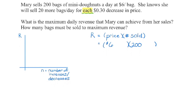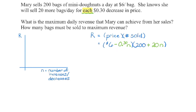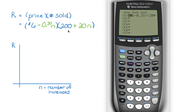Let's try one more revenue question. We are selling 200 bags of mini donuts at $6 each. Revenue equals price times number sold. Now something changes: we sell 20 more bags for each $0.30 decrease in price. So into the price bracket we decrease by 0.30N, and into the number sold bracket we increase by 20N. If we drop by one $0.30 decrease, we sell 20 more bags; drop by two decreases ($0.60), we sell 40 more bags.